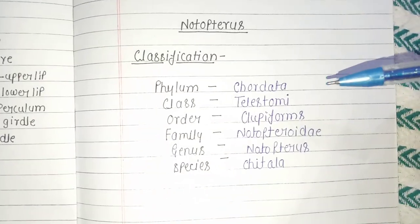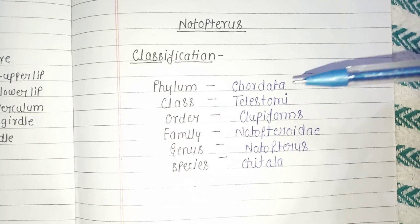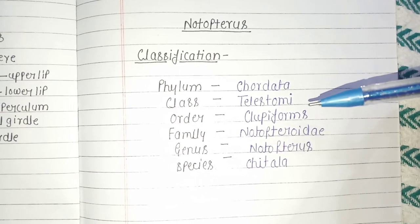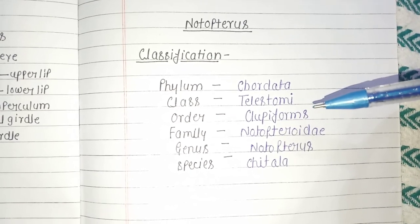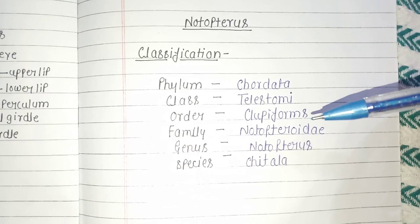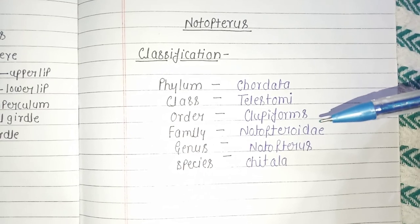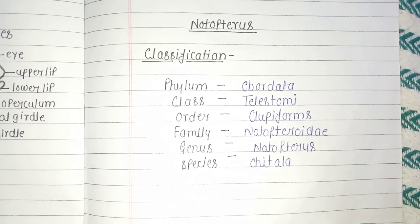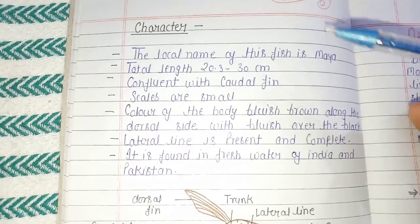Classification of Notopterus: Phylum Chordata, Class Teleostomi, Order Clupeiformes, Family Notopteridae, Genus Notopterus, Species chitala.